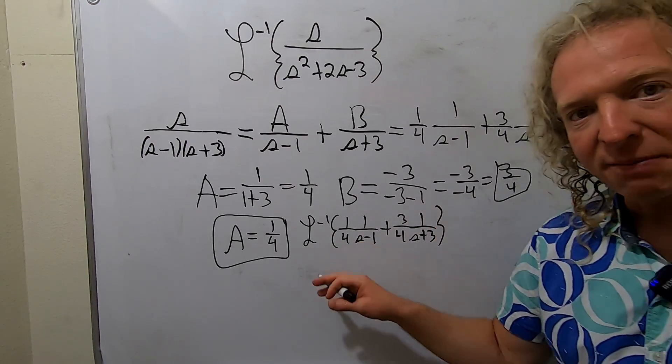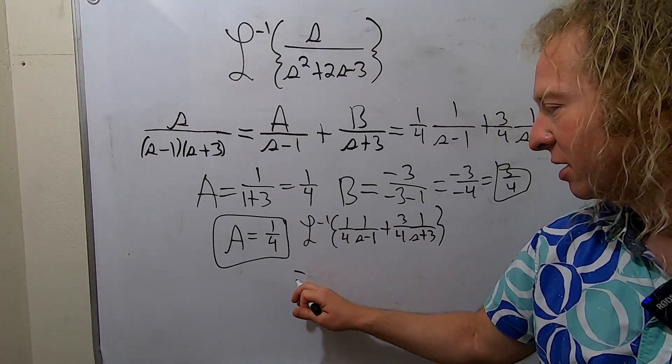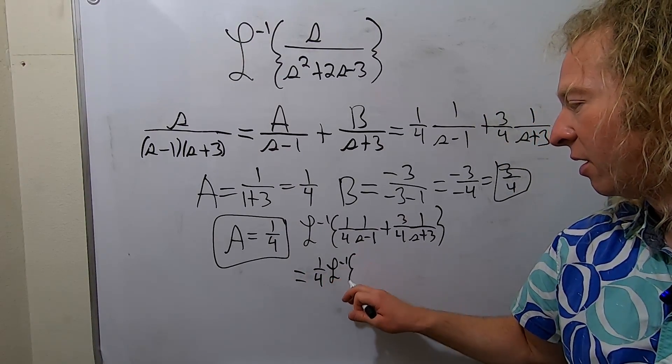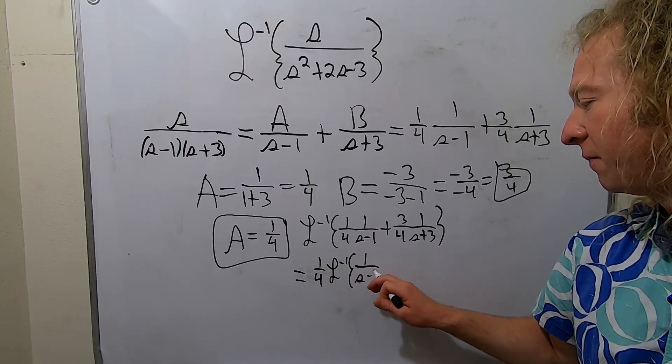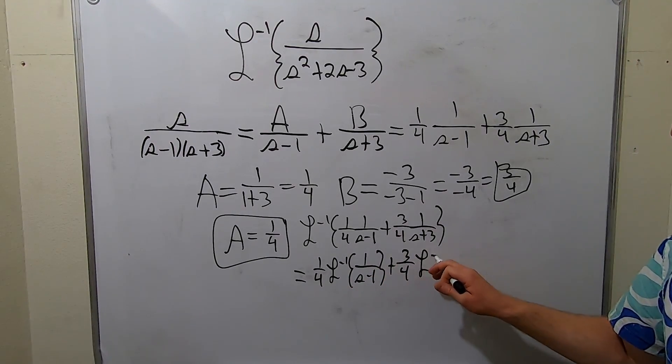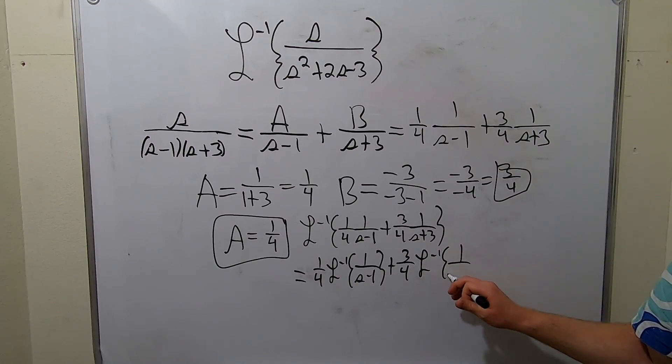And then we can break it up into two individual inverse Laplaces. This is 1 fourth, inverse Laplace of 1 over S minus 1, plus 3 fourths, inverse Laplace, 1 over S plus 3.